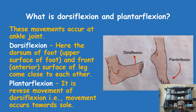In dorsiflexion, the heel may be touching the ground, or you can perform it off the ground. The dorsum of the foot — the upper surface — and the front of the leg come close to each other, meaning the angle at the ankle joint is reduced. The opposite of this movement, also occurring at the ankle joint, is plantar flexion.